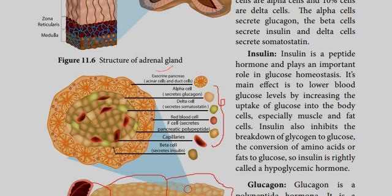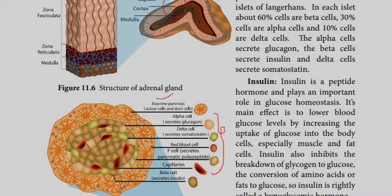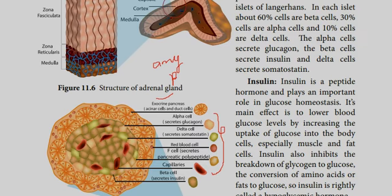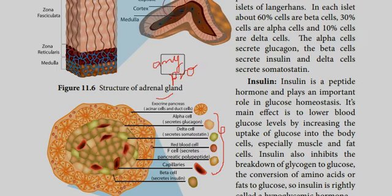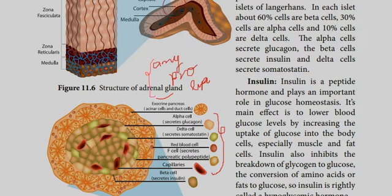The acinar cells are the exocrine part. What enzymes are secreted? Amylase, which breaks down carbohydrates. Then protease, which breaks proteins into amino acids. And lipase, which breaks lipids into fatty acids. These three are very important digestive enzymes: amylase, protease, and lipase.